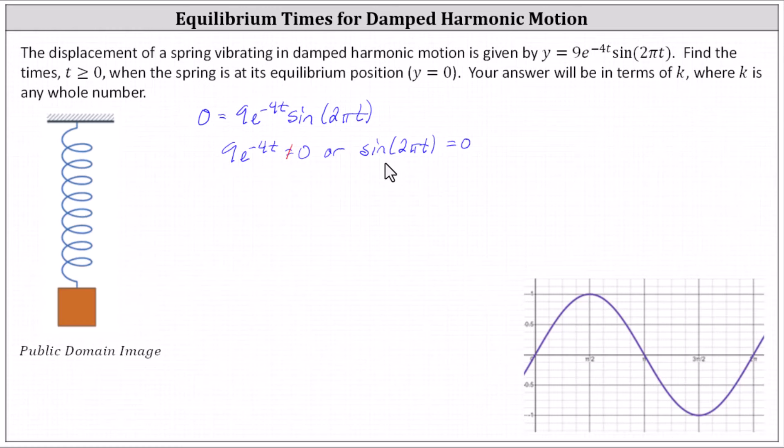Looking at the basic sine function below, notice the sine function value is zero at zero radians, π radians, 2π radians, and so on, which means when the input angle for the sine function is a multiple of π, the sine function value or output is equal to zero.